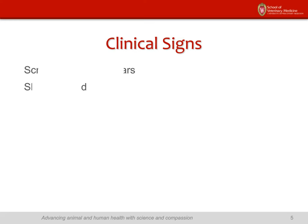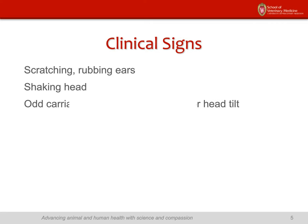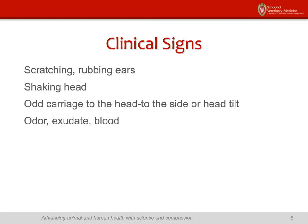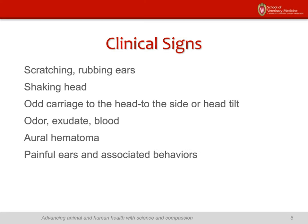As far as clinical signs, it's what you would expect: shaking and rubbing of the ears, shaking the head, and an odd carriage to the head. The dog may be holding his head to the side or have a head tilt. Odor is probably the most commonly reported sign. There may be blood or exudate, and sometimes the first sign is your house looks like a crime scene from blood. There are also aural hematomas — bleeding between the flaps of the ear. Dogs that are head-shy are often dogs that have had a lot of ear disease.